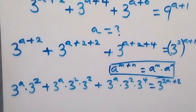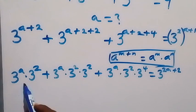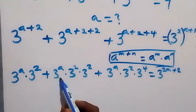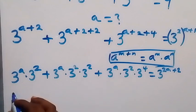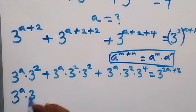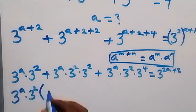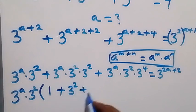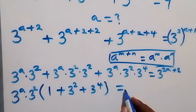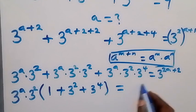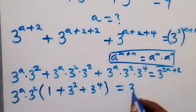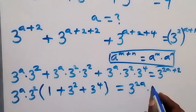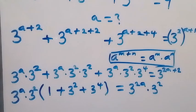Then in the next step, from the left hand side we discover we have 3 raised to power a times 3 raised to power 2 common. Let's factor it out: we have 3 raised to power a times 3 raised to power 2 out, then into brackets. What is left is 1, then plus what is left here is 3 raised to power 2, then plus 3 raised to power 4, close bracket, which equals to — applying this law as 3 raised to power 2a times 3 raised to power 2.